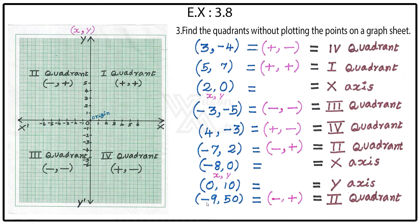The last point: minus 9 comma 50. Minus 9 is negative and 50 is positive, so minus comma plus. Where does minus comma plus come? Yes, minus comma plus — that is the second quadrant.